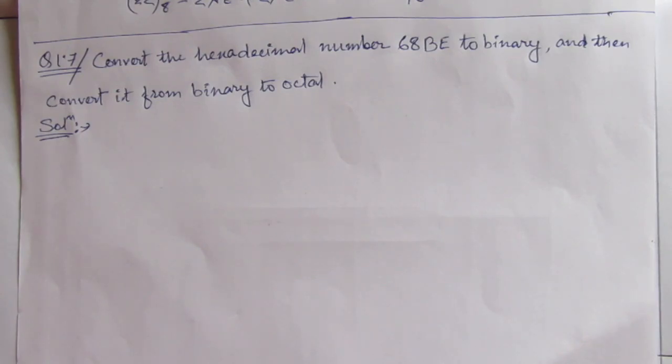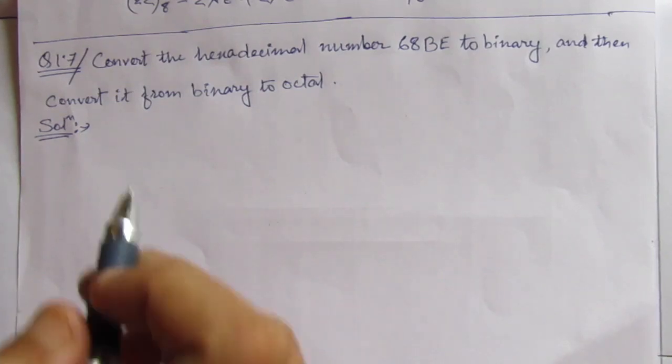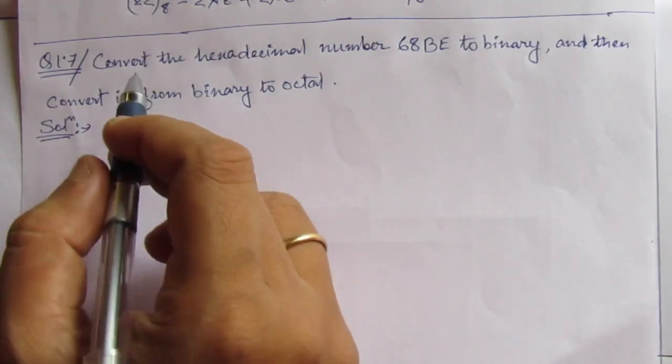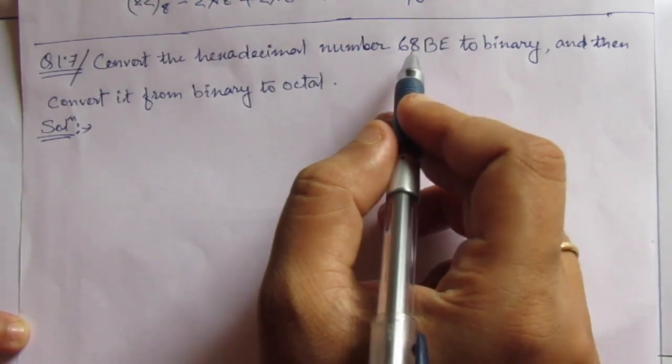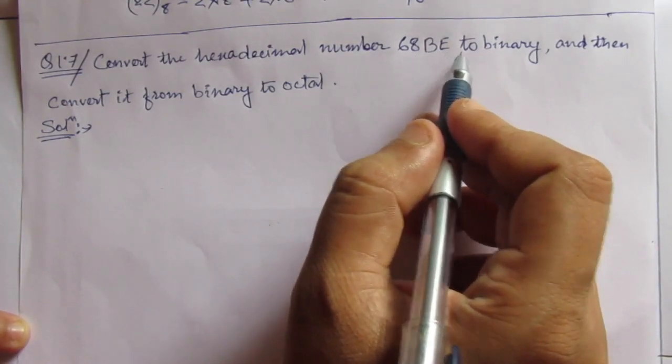In this video, we will solve question number 1.7 from chapter 1. Question number 1.7 is: convert the hexadecimal number 68BE to binary.